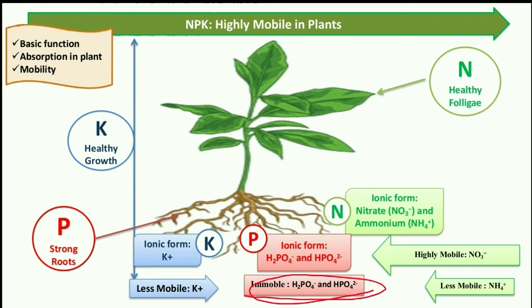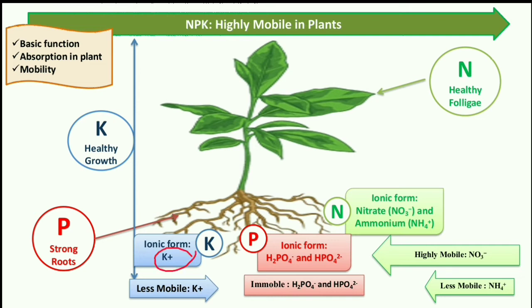Phosphorus in both these forms is immobile in soil. Unlike nitrogen, where one form is highly mobile and one is less mobile, phosphorus is immobile. The next element is potassium, whose basic function is responsible for healthy overall plant growth. Potassium is generally available through the soil as K positive, and it is less mobile — just like ammonium, the positive form is less mobile.